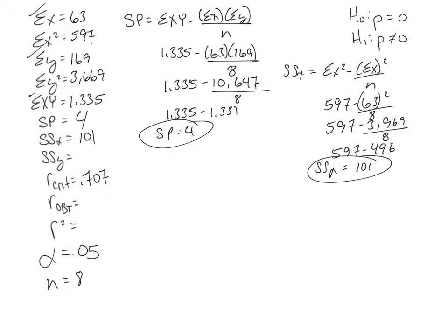Okay, let's do the exact same thing now for my sum of squares, but this time we're going to do Y. So sum of Y squared times sum of Y squared divided by N, and my sum of Y squared was that big large number, right, divided by the 3,669 minus 169 squared divided by our sample size, again, of 8.